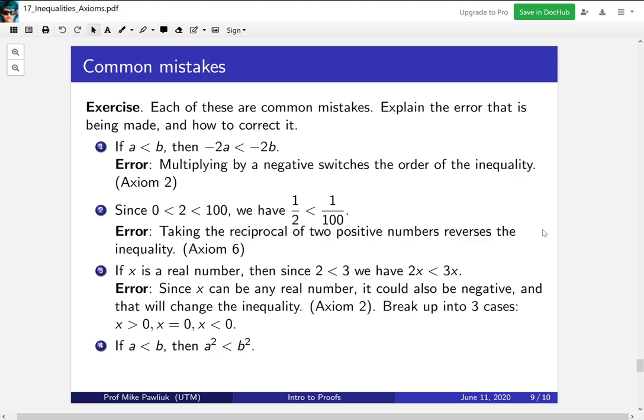And then finally, a very common one. If a is less than b, then a squared is less than b squared. Well, the issue here is that the person is trying to use fact one, but fact one requires both a and b to be positive. Can you see why a and b have to both be positive here?